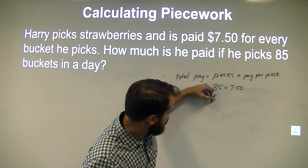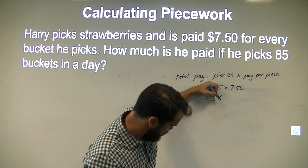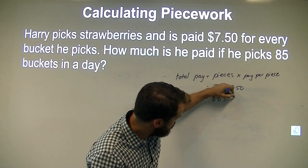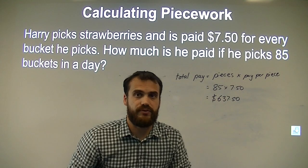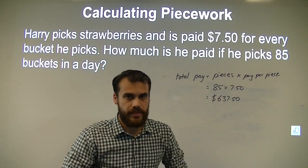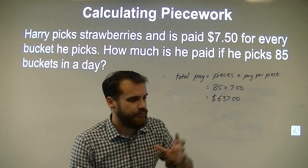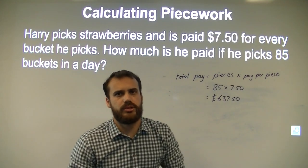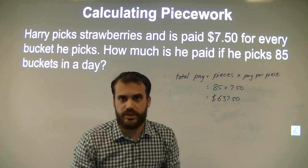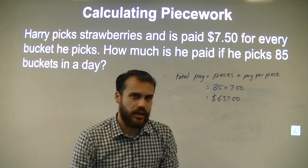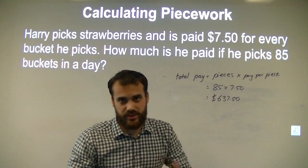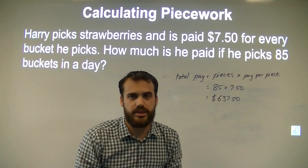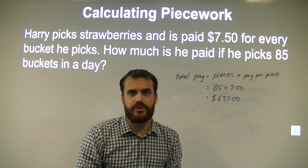Going straight into the calculator, we can see that this guy's going to earn $637.50. That's our first example on piece work. In the next video we're going to look at someone delivering leaflets based upon piece work. The maths there can be a little bit confusing, so that's why we're going to provide a video for it.